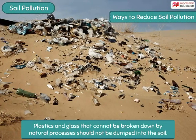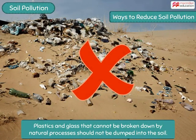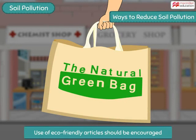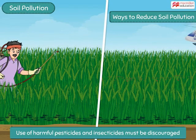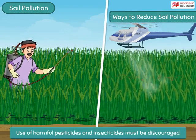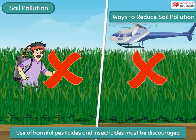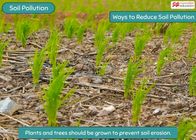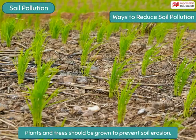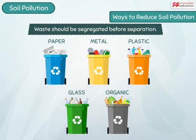It is very clear that soil pollution is very harmful and steps should be taken to reduce it. Wastes like plastics and glass should not be dumped into the soil. Use of articles that are eco-friendly should be encouraged. Use of harmful pesticides and insecticides in agricultural fields must be discouraged. Plants and trees should be grown on empty pieces of land to prevent soil erosion. We all too can help by segregating waste before disposing it.